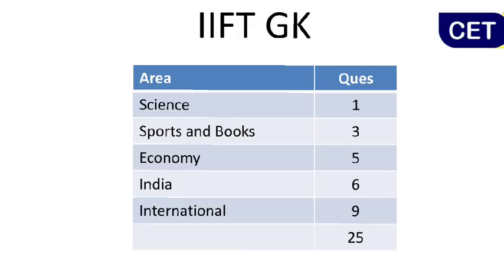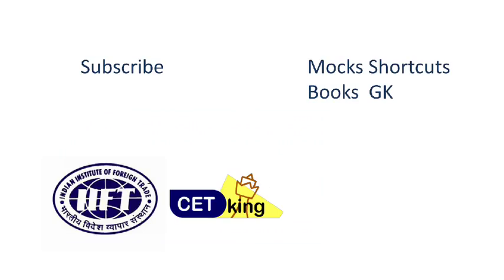To summarize: science-based questions — 1, sports and books — 3, economy — 5, about India — 6, and international — 9 questions. This is what the GK section comprised of, and your target is to solve 10 out of 25 questions.